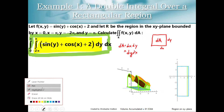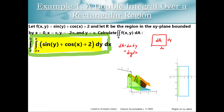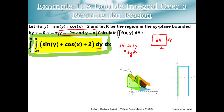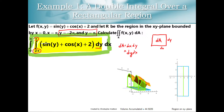Now let's make sure that our dy and our limits of integration match. We can see that our region on the xy-plane is bounded by y equals negative 2 pi and y equals pi. Looking at our dy integral, that looks good — we are integrating from negative 2 pi to pi.